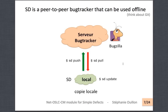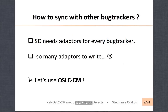But the question is: if your remote bug tracker is not a Simple Defects bug tracker — which will be the most common case — how do you get Simple Defects to be able to synchronize? To do that, Simple Defects needs adapters for every kind of bug tracker, for example Redmine, RT, Bugzilla, and so on. So it means you will have to write many adapters.